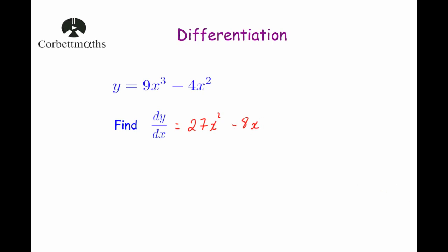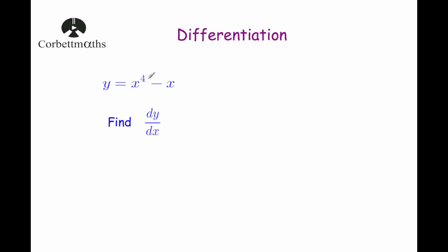Our last example: y equals x to the power of 4 minus x. To find dy by dx, differentiate each term separately. For x to the power of 4: bringing the 4 down gives 4x cubed. For minus x, which is minus 1x: whenever it's just a number times x, you get that number, so it's minus 1. Therefore dy by dx equals 4x cubed minus 1.